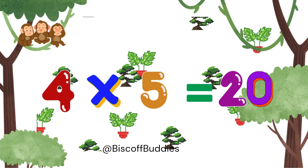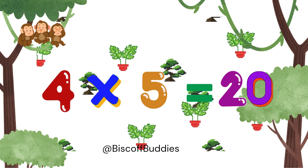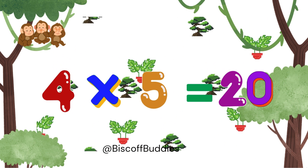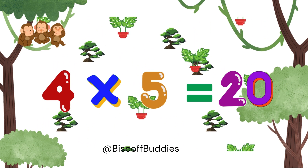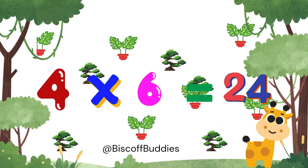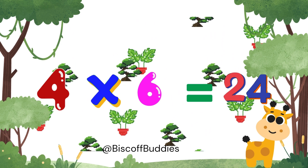4 times 5 is 20, right? 4 times 6 is 24, just right.